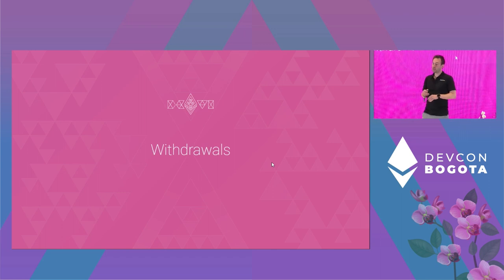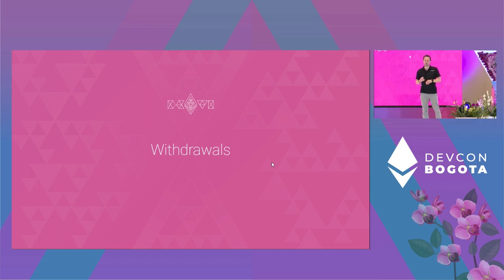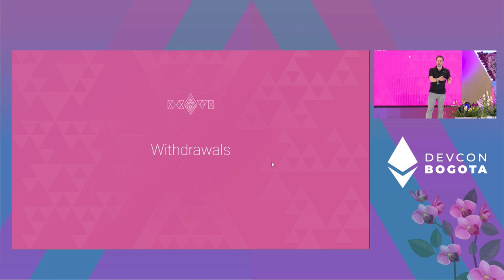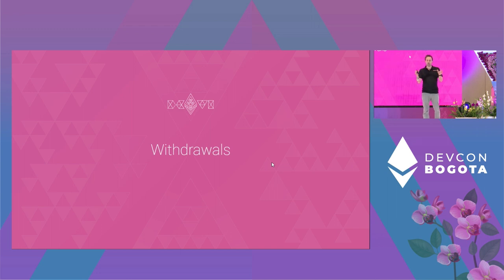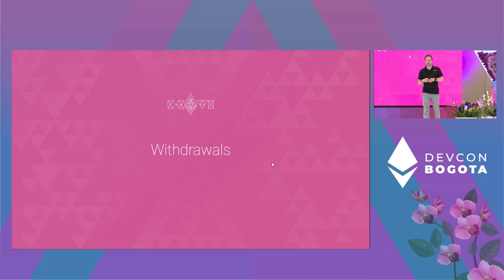A decentralized staking protocol is a set of smart contracts that mediates between depositors and node operators. It escrows funds into Ethereum's proof-of-stake system and then back again. On withdrawal, the protocol transparently distributes those funds and ensures that each party receives what they expect. In short, withdrawal is where most of the action happens.